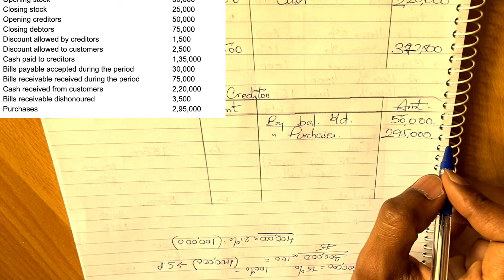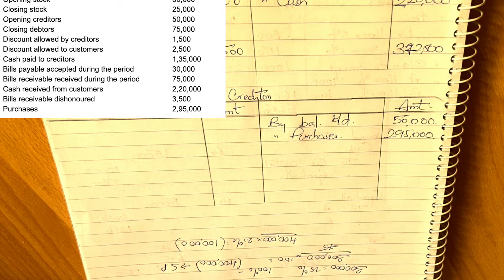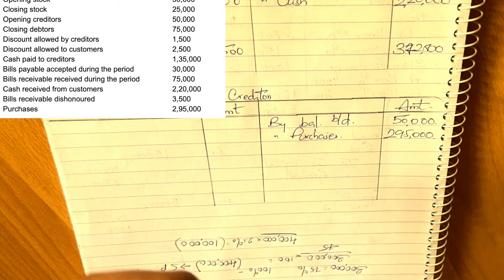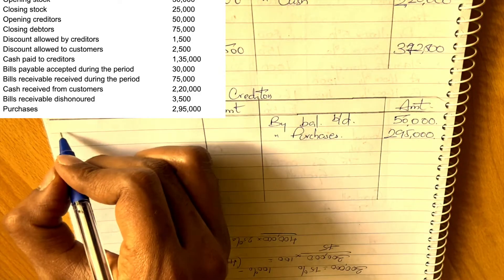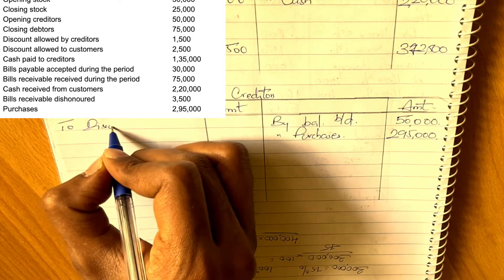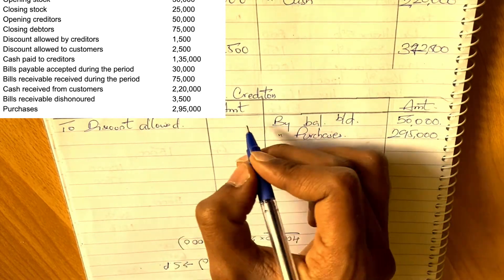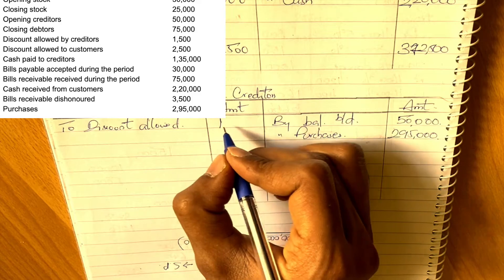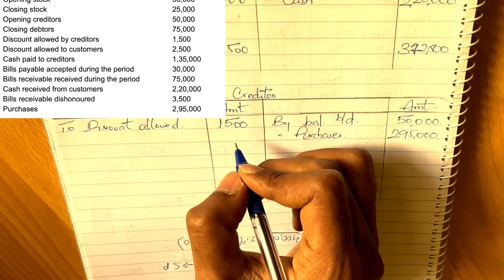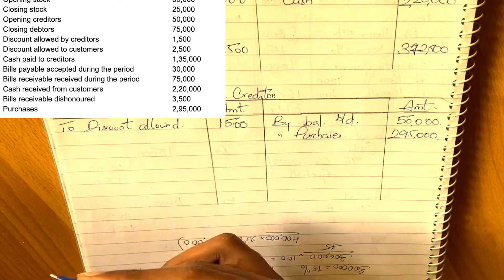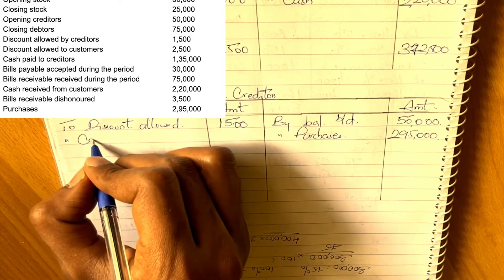Next, discount allowed by creditors: when creditors give us a discount, our liability to them decreases. So we show discount on the debit side of the creditors account — amount 1,500. Then cash paid to creditors: paying cash reduces the credit balance, so 'cash paid' goes on the debit side — 1,35,000.